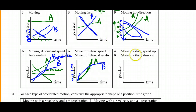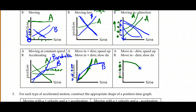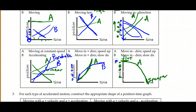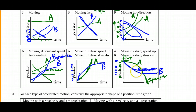Moving in the negative direction and speeding up: the graph trends downward, and the spaces between positions increase, giving a steepening downward curve. Moving in the negative direction and slowing down: the spaces get closer together, so we get a flattening of the graph — steeper at the start and flatter at the end, indicating slowing down.